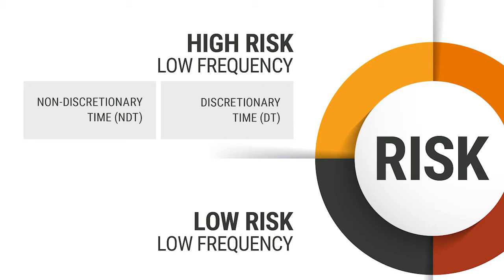In my long programs, I call the top left portion of the top left box — those high-risk, low-frequency, non-discretionary time tasks — I call those the core critical tasks. Very risky, done very rarely with no time to think. Those are the ones that scare me the most. The discretionary time tasks: if you have time to think, use it. But the non-discretionary time tasks are the ones that require constant ongoing training.